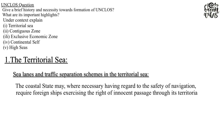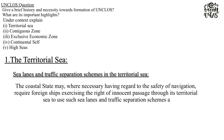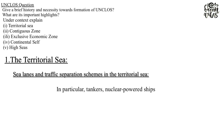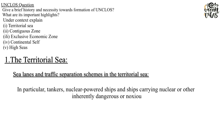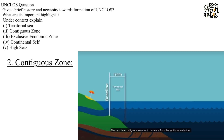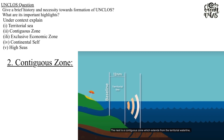Sea lanes and traffic separation schemes: In the territorial sea, the coastal state may, when necessary and having regard to the safety of navigation, require foreign ships exercising the right of innocent passage to use such sea lanes and traffic separation schemes as it may designate or prescribe for the regulation of the passage of ships. In particular, tankers, nuclear-powered ships, and ships carrying nuclear or other inherently dangerous or noxious substances or materials may be required to confine their passage to such sea lanes.